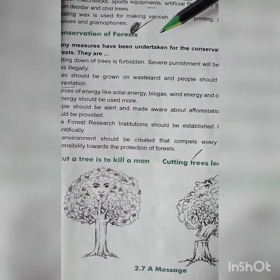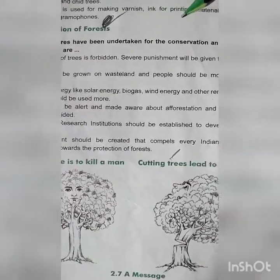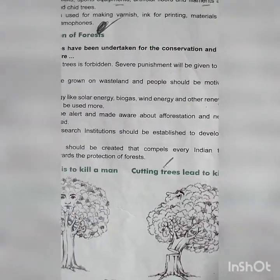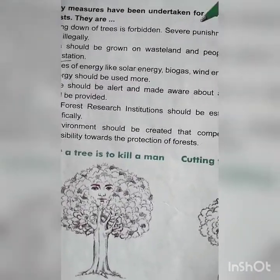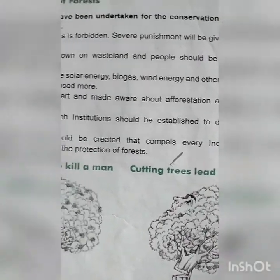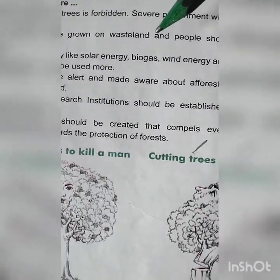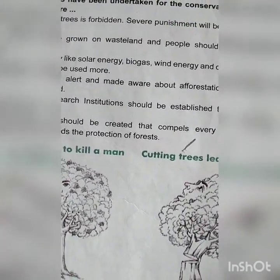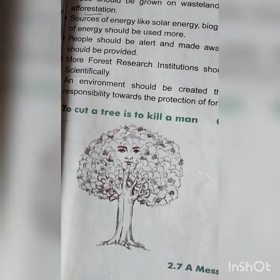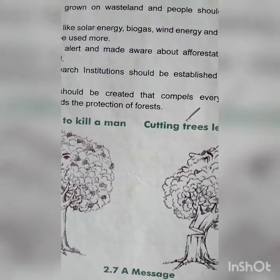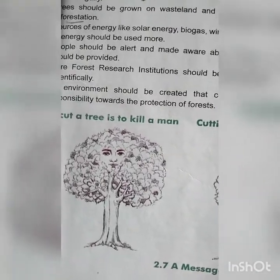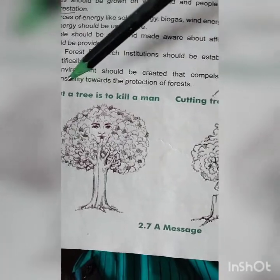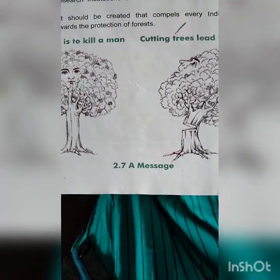Now, conservation of forests. Many measures have been undertaken for the conservation and protection of forests. Cutting down of trees is forbidden, and severe punishment will be given to those who cut trees illegally. Trees should be grown on wasteland and people should be motivated towards afforestation. Sources of energy like solar energy, biogas, wind energy, and other renewable sources should be used more. People should be made aware about afforestation and necessary help provided. More forest research institutions should be established to develop forests scientifically. Every Indian should work with responsibility towards the protection of forests — to cut a tree is to kill a man.